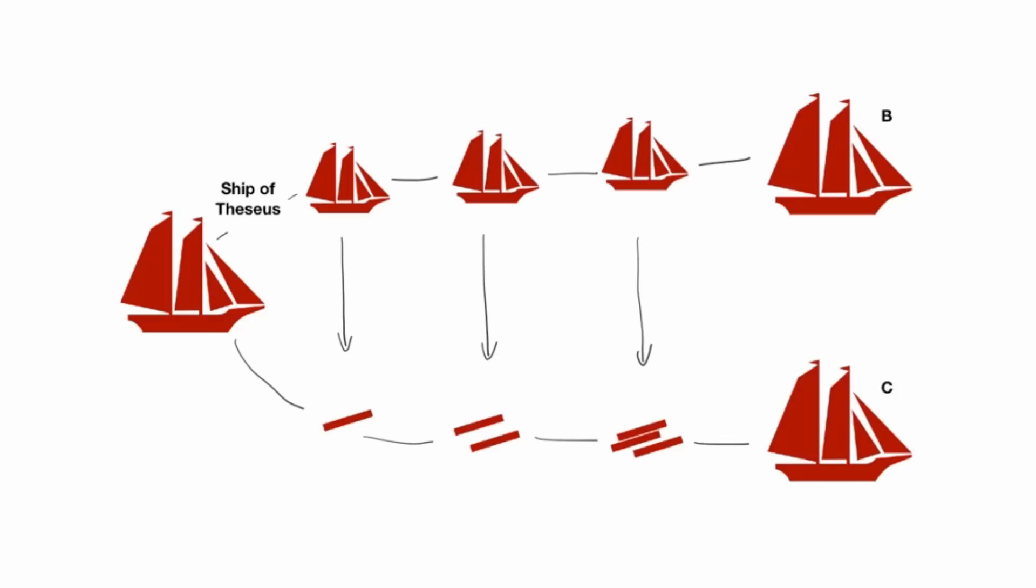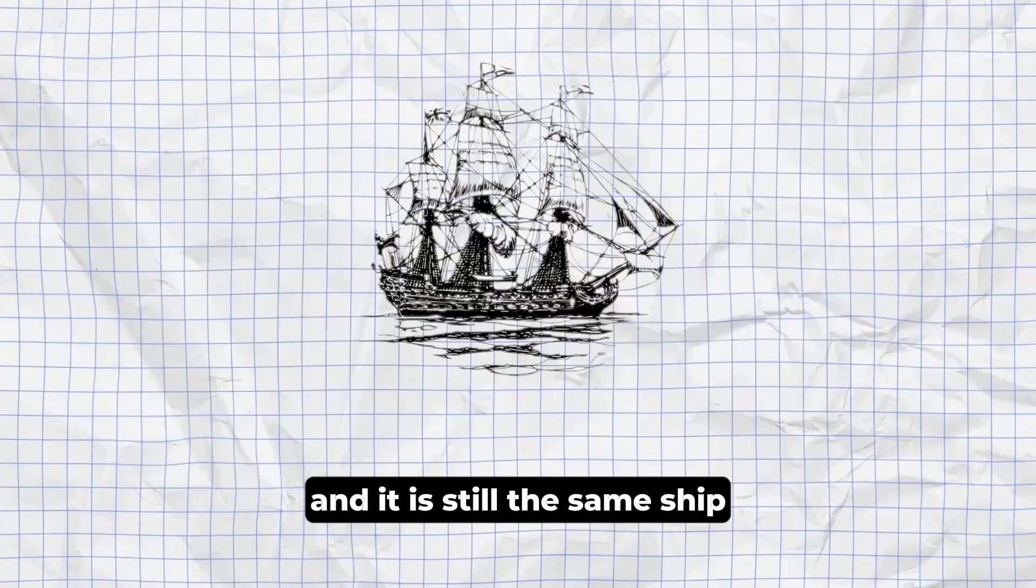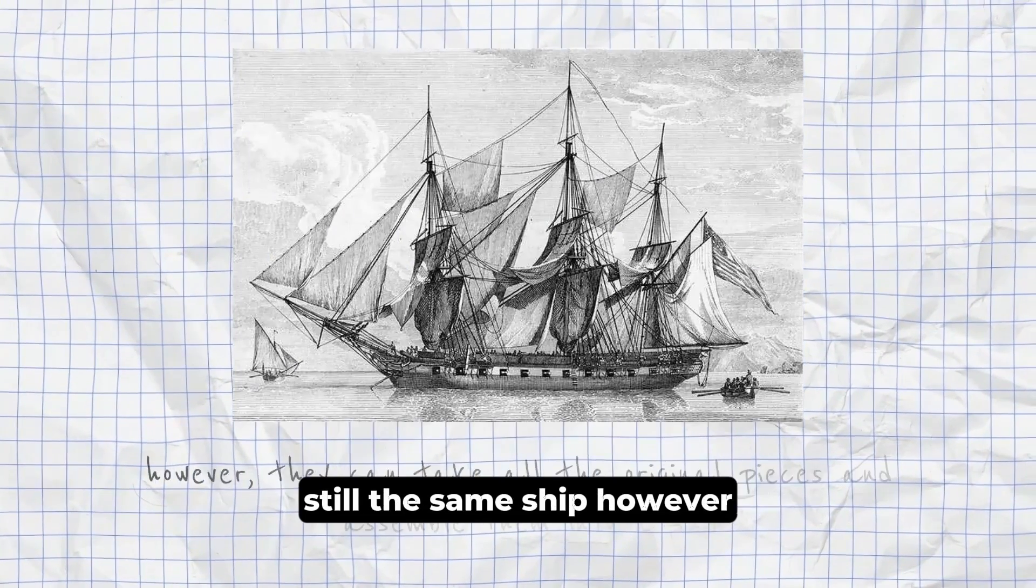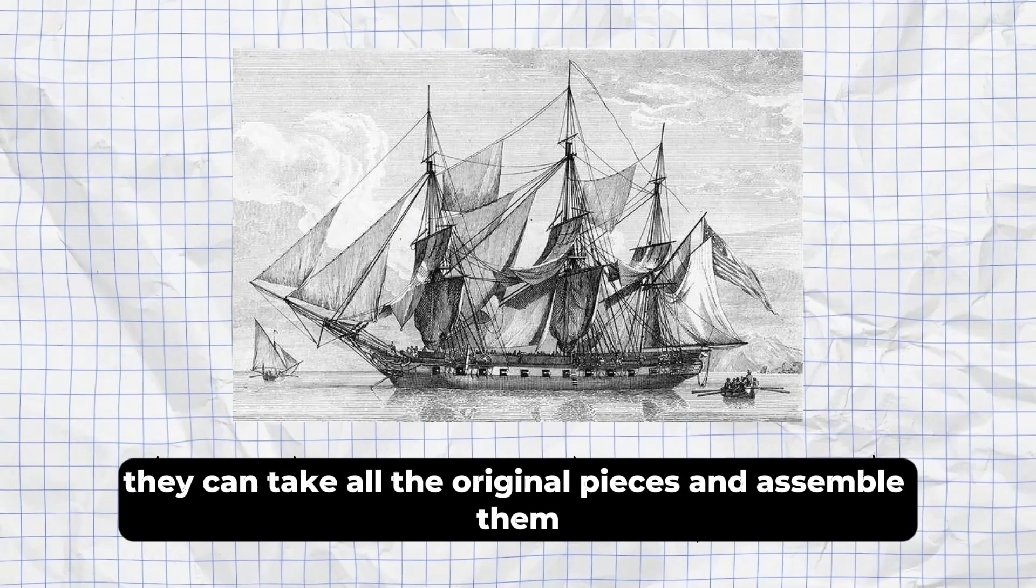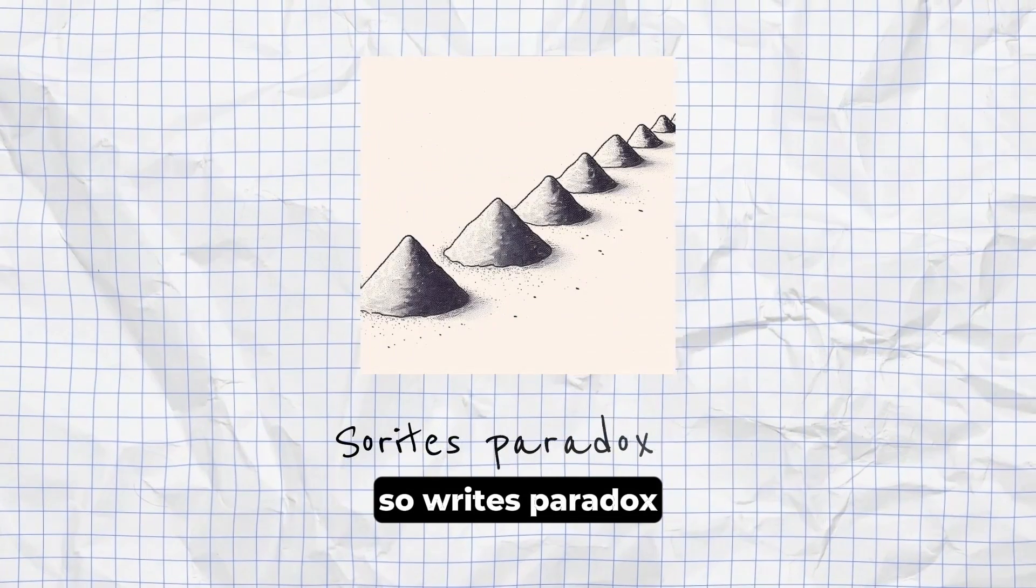The Ship of Theseus Paradox. Seems like one can replace any component of a ship and it is still the same ship. So they can replace them all, one at a time, still the same ship. However, they can take all of the original pieces and assemble them into a ship. That too is the same ship they began with.